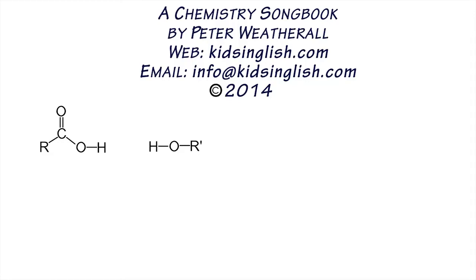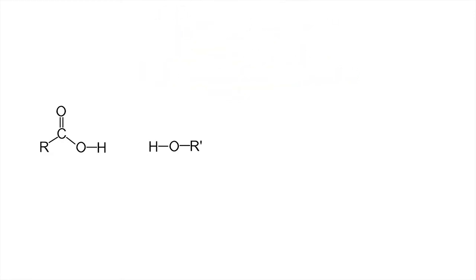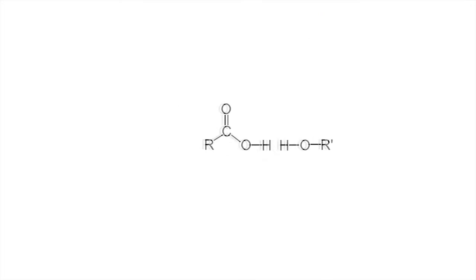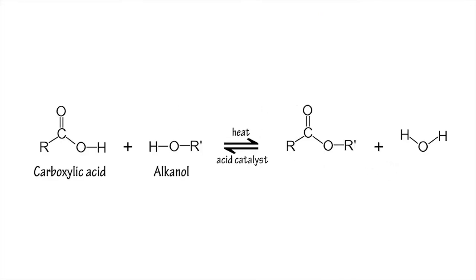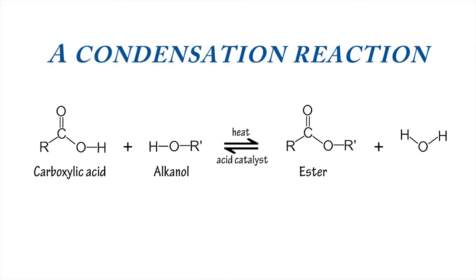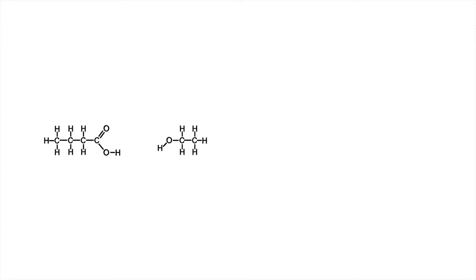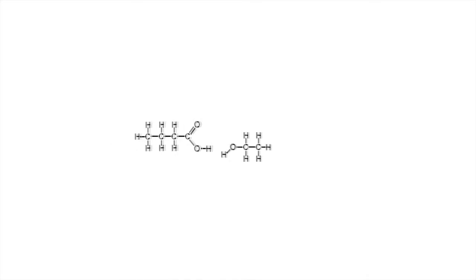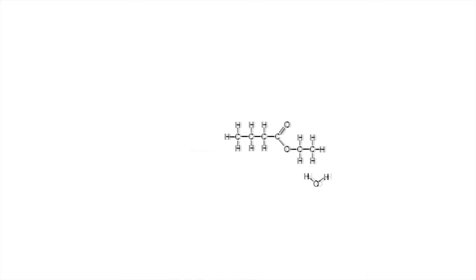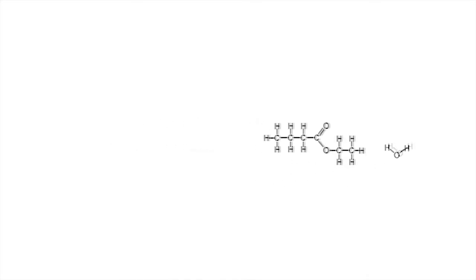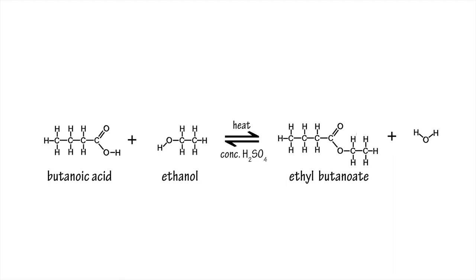An alkanol and a carboxylic acid will combine with one another in the presence of heat and an acid catalyst to form an organic compound called an ester in what is known as a condensation reaction, since a molecule of water is released in the process. For example, when ethanol and butanoic acid are heated in sulfuric acid, they react to form the ester ethylbutanoate.